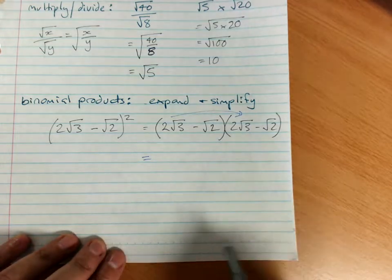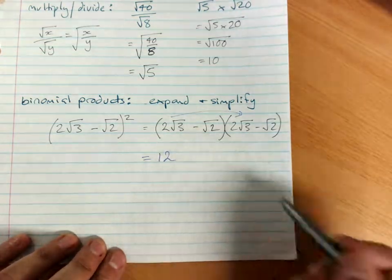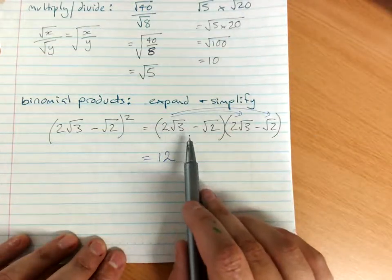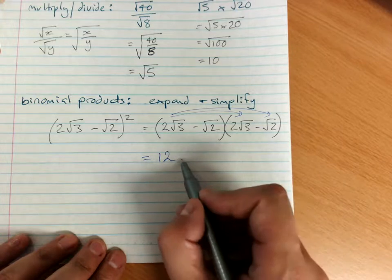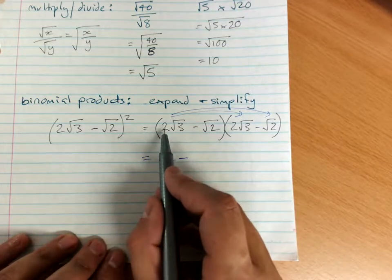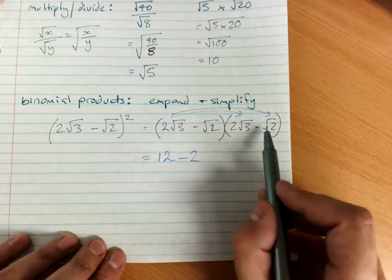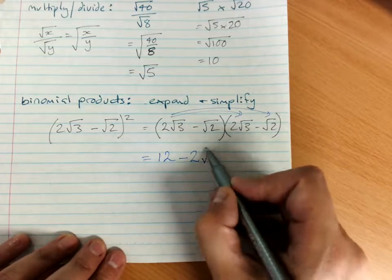Here there, this is 2 root 3 times negative root 2. Minus 2 times, so 2 times negative 1 is negative 2. Root 3 times root 2 is root 6.